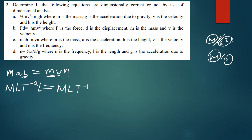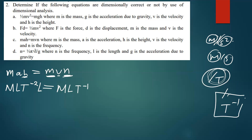On the right side, mass gives M, velocity is meters per second so that's LT⁻¹, and the frequency n has dimension T⁻¹ — since frequency is cycles per time.